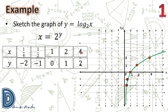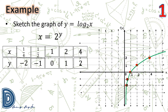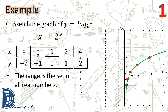Let us recall the properties. We see that the domain is the set of all positive real numbers because there is no point on the graph for which x = 0 or negative. The range is the set of all real numbers — as x increases, the y-value increases toward positive infinity, and as x approaches 0 from the right, the value of y decreases without bound.